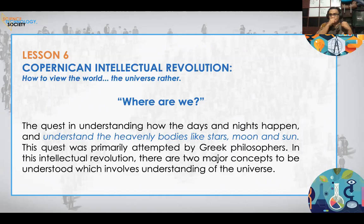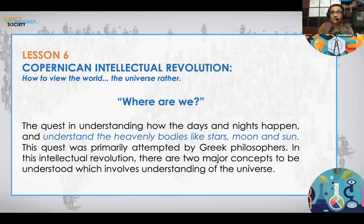In this intellectual revolution there are two major concepts involved in understanding the universe. The Copernican Intellectual Revolution is about the universe. In early times, the first recorded people to venture into this were the Asians and the Greeks. Notable people who started trying to understand the stars include Aristotle and Plato. Prior to that, even the Egyptians and Middle Eastern civilizations tried to understand the moon, the stars, and the solar system.